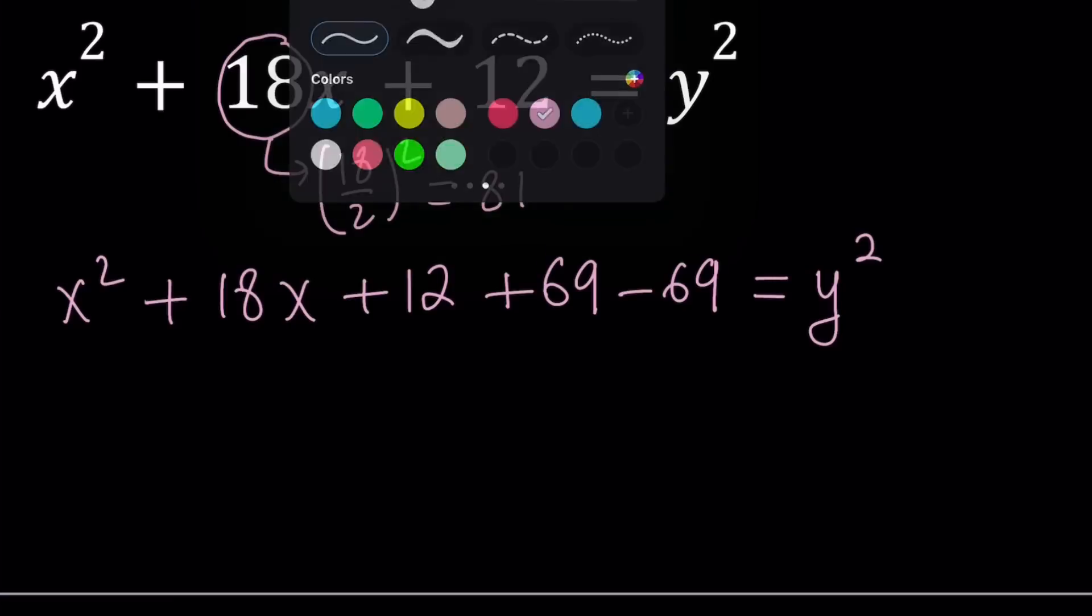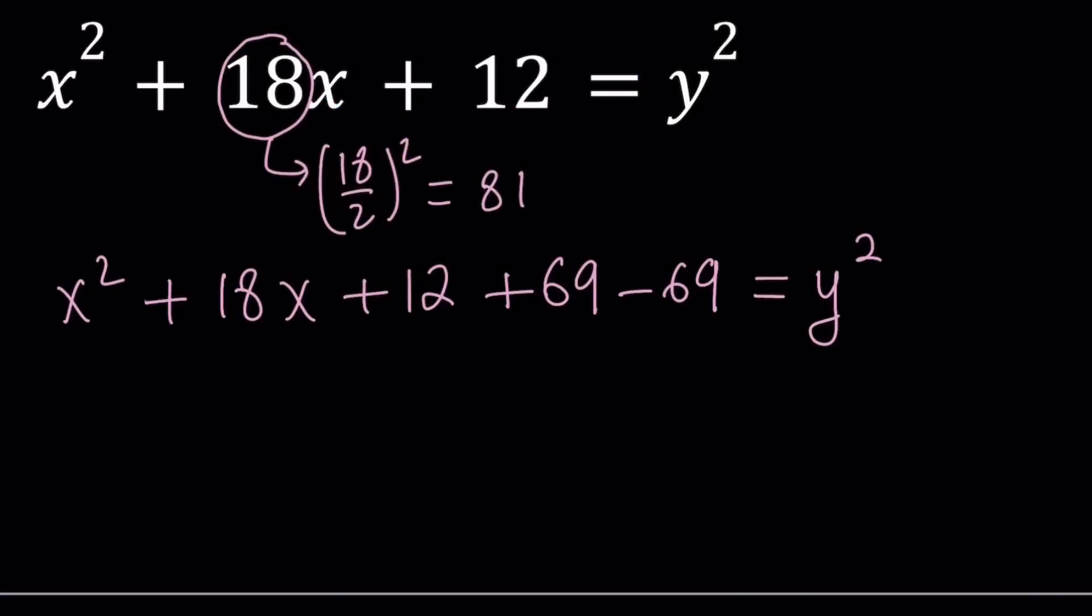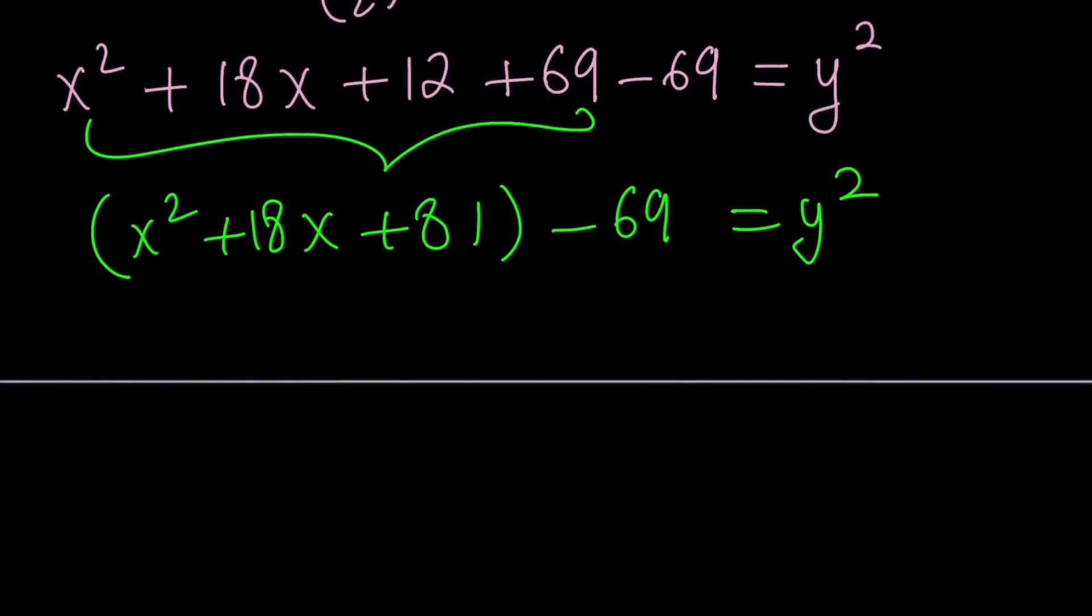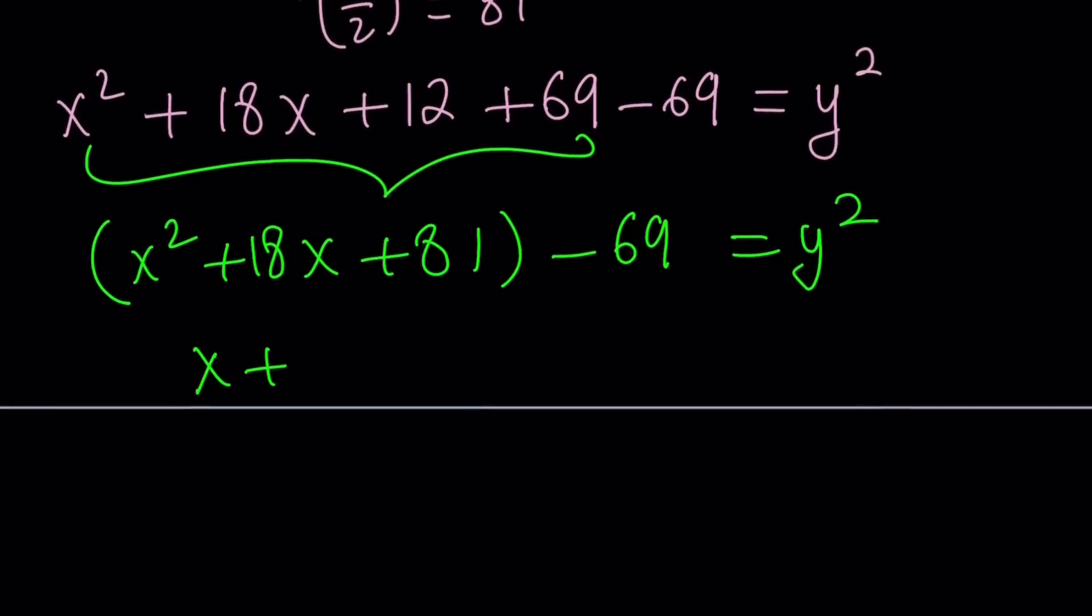So now we can take this expression and write it as x² + 18x + 81 - 69 = y². Now inside the parentheses, we have a perfect square. So let's write it as (x + 9)² - 69 = y².